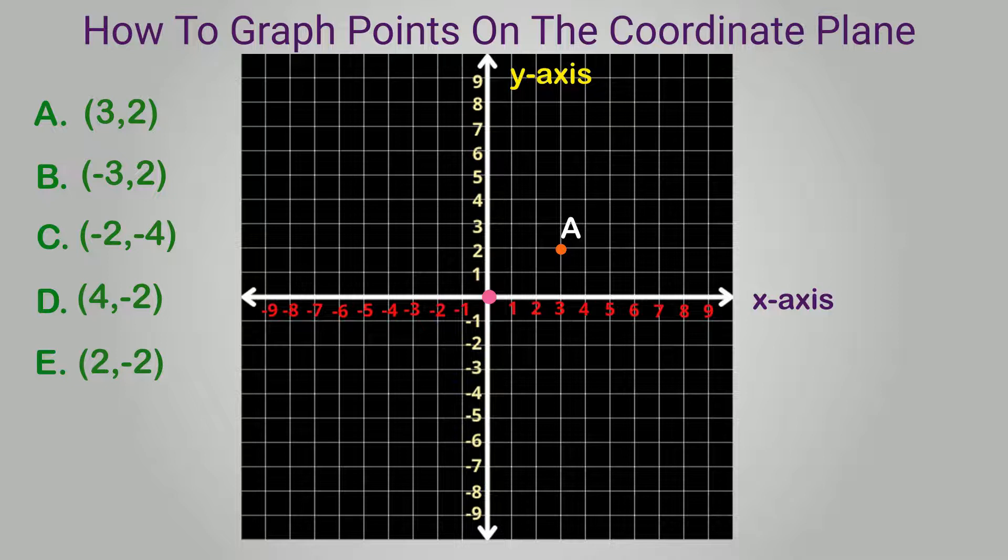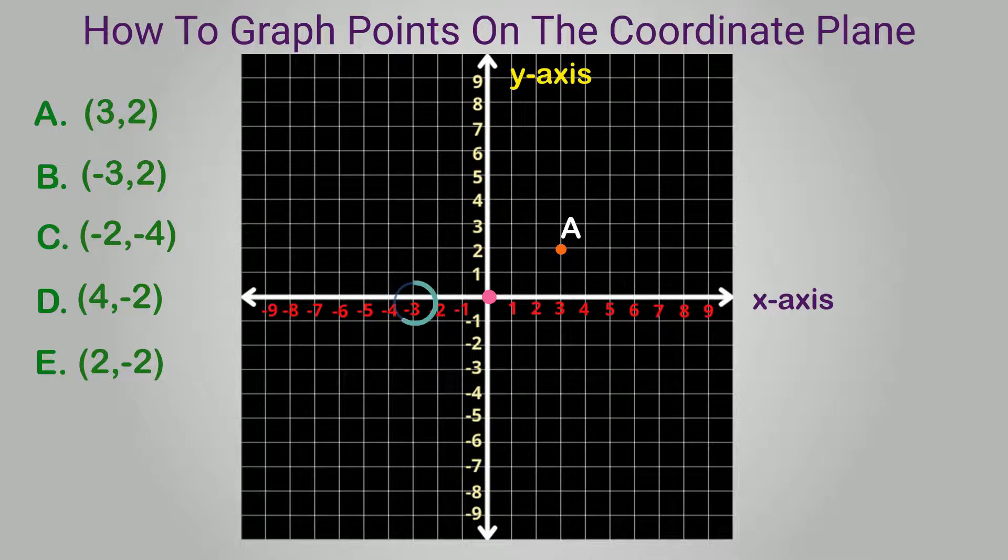Next, let's graph negative 3 and 2. Since the first number is negative 3, we will move three spaces to the left. The y value is still positive, so we move up two spaces. You will notice that this point is located in quadrant 2.